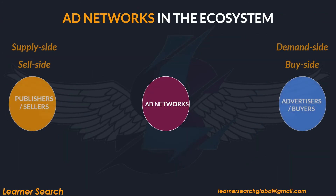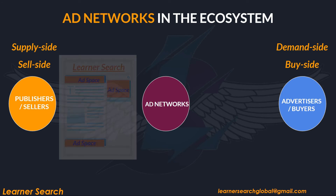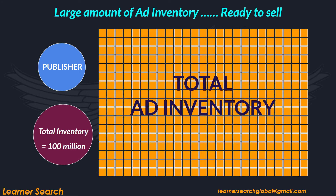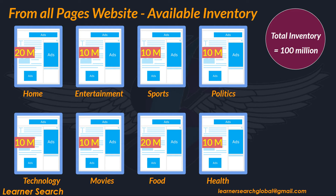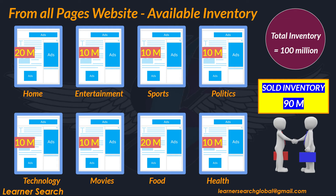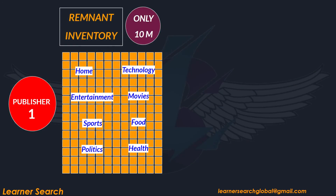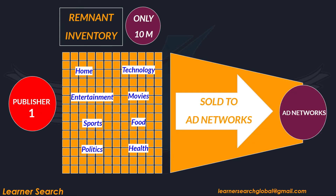Ad networks sit at the center, with publishers on the seller side and brands on the demand side of the ecosystem. Let's assume I am a publisher with a defined inventory. The total inventory on sale for this month is 100 million ad impressions, across all web pages belonging to different page categories like home, entertainment, sports, politics, technology, movies, etc. on the website. Out of 100 million impressions, let's assume 90 million impressions are sold and they are premium. Remaining 10 million impressions are unsold across different page categories. Now these remnant impressions are ready to sell via ad networks, and ad networks purchase this remnant inventory.